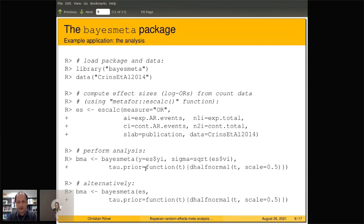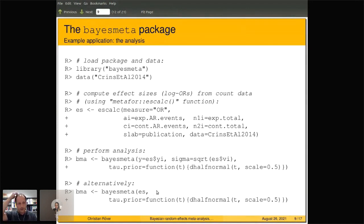We don't need to specify y and sigma explicitly — we can also just provide the es object that we defined at the top to the bayesmeta() function.